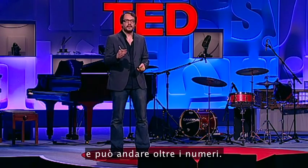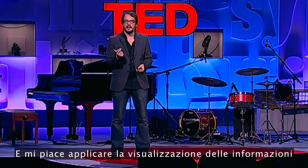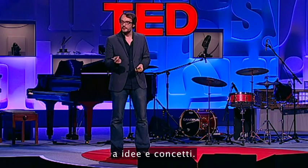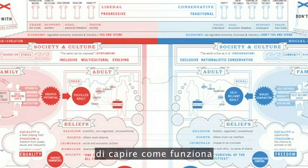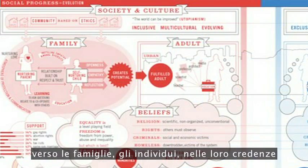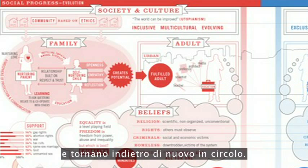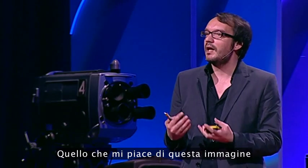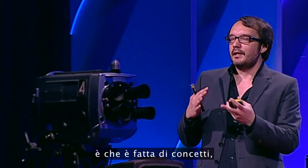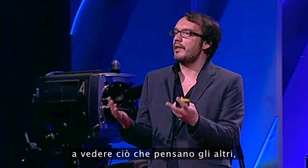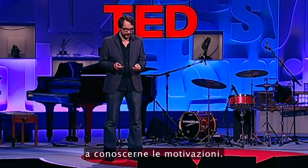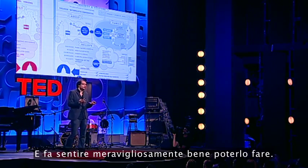But it can go beyond data and beyond numbers. I like to apply information visualization to ideas and concepts. This is a visualization of the political spectrum — an attempt for me to try and understand how it works, and how the ideas percolate down from government into society and culture, into families, into individuals, into their beliefs, and then back around again in a cycle. What I love about this image is it's made up of concepts. It explores our world views, and it helps me to see what others think and to see where they're coming from.